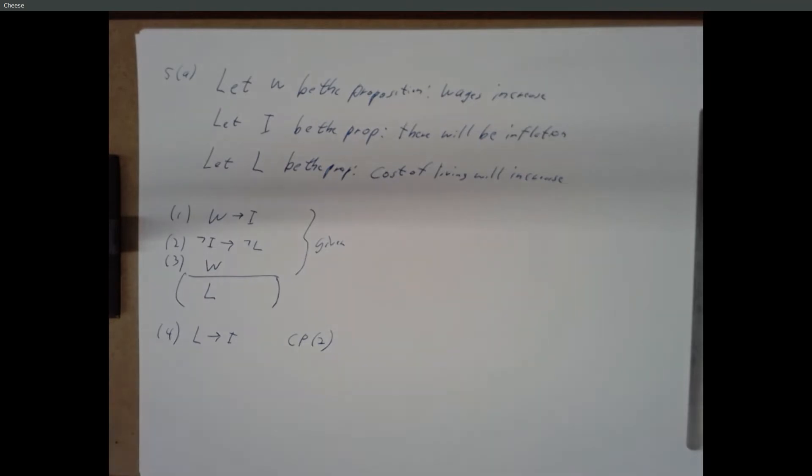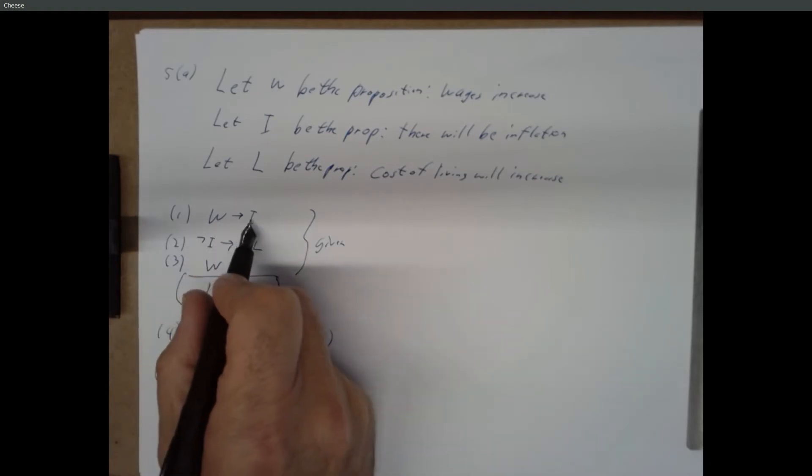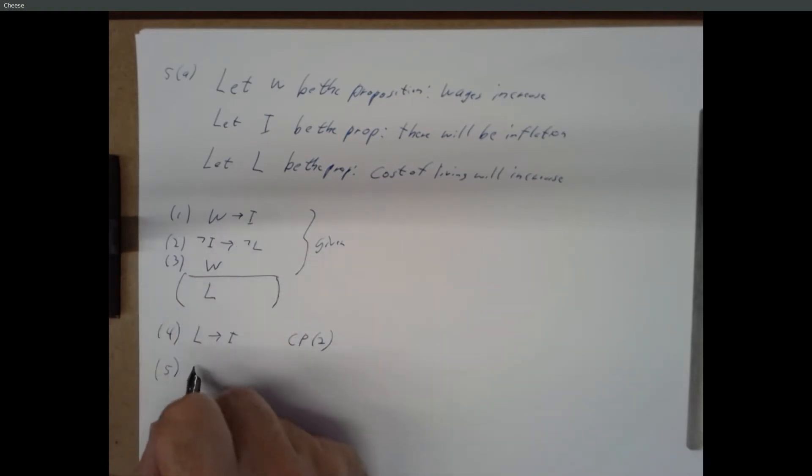What else can we do? Nothing that helps. Well, maybe something that helps. How about something that doesn't help? Could be direct reasoning with one and three. Let's do one and three together. We know that if W is true, then I is true. We know W is true. We can conclude I. That's direct reasoning. One and three.